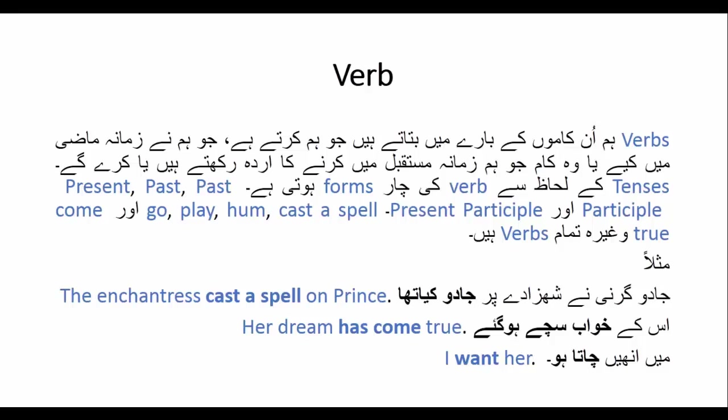کچھ verbs کے ساتھ noun کا اضافہ ضروری ہوتا ہے تبھی وہ صحیح معنی ادا کرتے ہیں۔ مثال: خواب سچے ہو گئے — dreams came true — یہاں 'come' کے ساتھ 'true' استعمال کیا گیا کیونکہ اسی سے 'سچ ہو جانا' کا معنی آتا ہے۔ اسی طرح کچھ verbs پھر اپنے معنی میں صحیح آتے ہیں جب ان کے ساتھ noun کا استعمال ہو۔